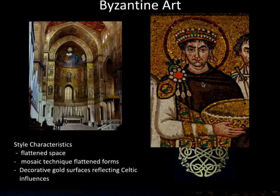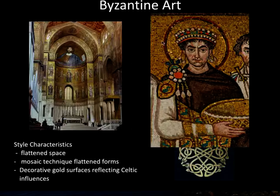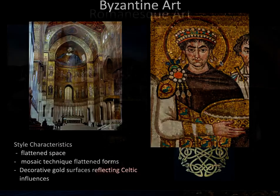You can see the use of various colors to give some dimension to a form, though it's not really accurate. The most naturalistic part is Justinian's face. Often in Byzantine art you will see a halo, which depicts the saintliness or holiness of the person depicted.